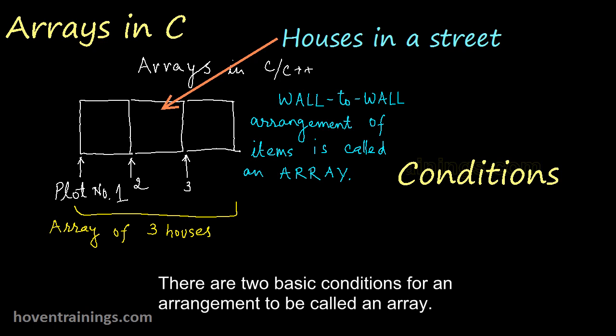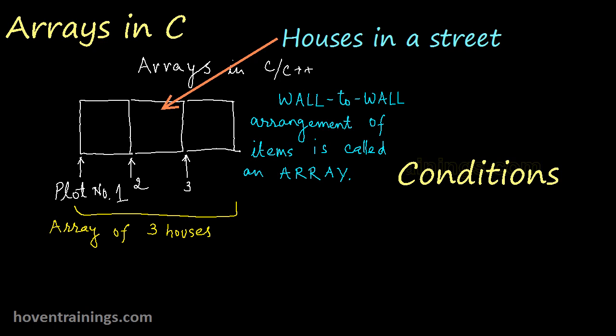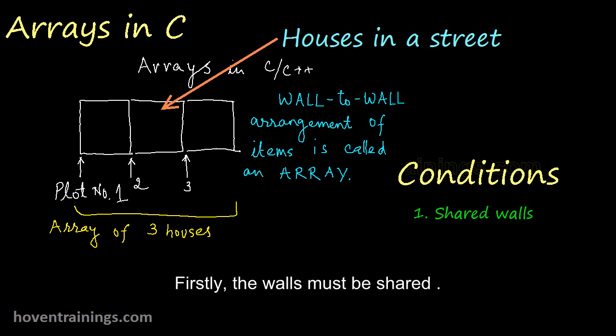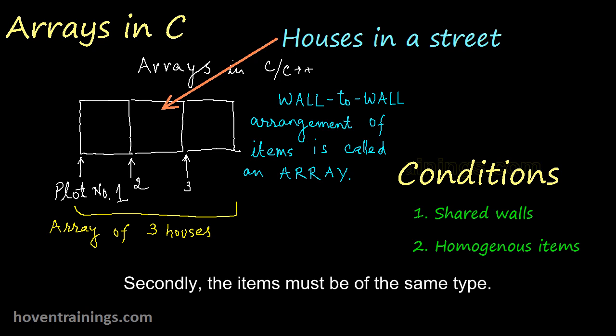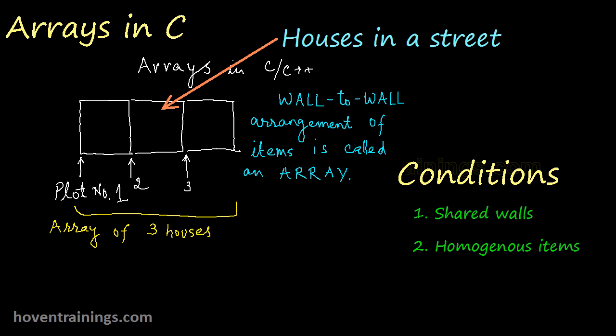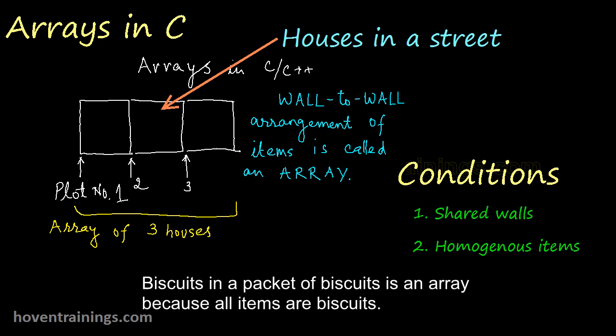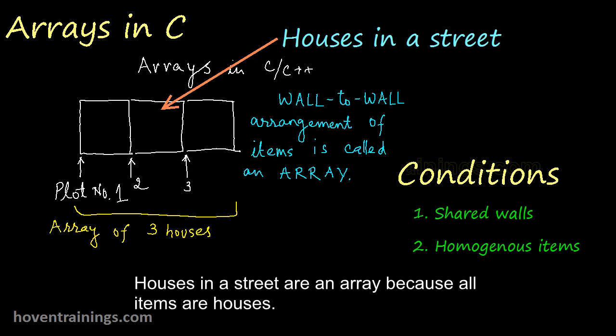There are two basic conditions for an arrangement to be called an array. Firstly, the walls must be shared. Secondly, the items must be of the same type. Biscuits in a packet of biscuits is an array because all items are biscuits. Houses in a street are an array because all items are houses.